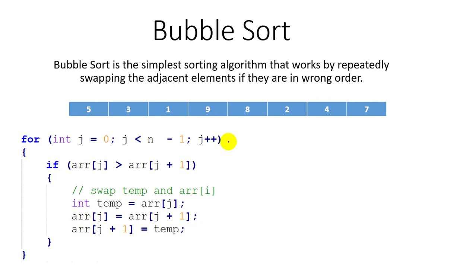Let's take another example: what will happen when we drop two stones from the fifth floor? If the weight of one stone is 1 kg and another stone is 100 grams, which stone will touch the ground first? Obviously the 1 kg stone will touch the ground first, because its weight is heavier compared to the other stone.